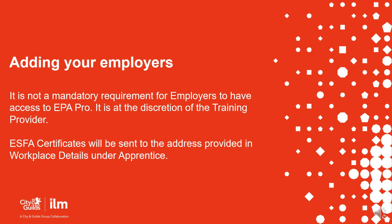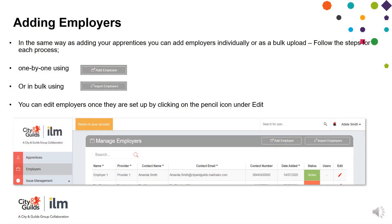Adding your employers. It is not a mandatory requirement for employers to have access to EPA Pro — it is at the discretion of the training provider. ESFA certificates will be sent to the address provided in the workplace details under apprentice. In the same way as adding your apprentices, you can add an employer individually or as a bulk upload. Use the add employer tab for one by one, or the import employers tab for bulk upload. Both options can be found under Employers from the main menu on the dashboard. Once an employer has been created, you can make changes by clicking on the pencil icon under edit.